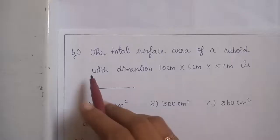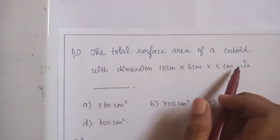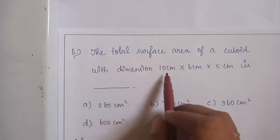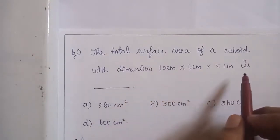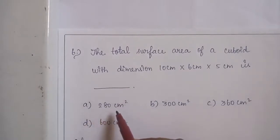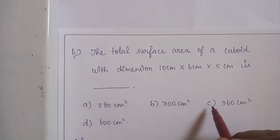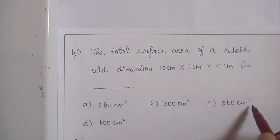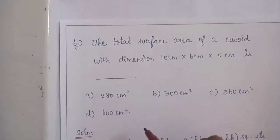Question No. 6: The total surface area of a cuboid with dimensions 10 cm by 6 cm by 5 cm is dash. Option A: 280 cm square. Option B: 300 cm square. Option C: 360 cm square. Option D: 600 cm square.